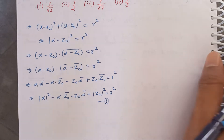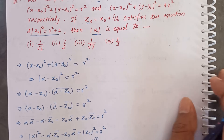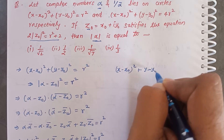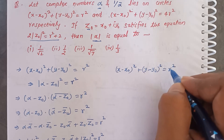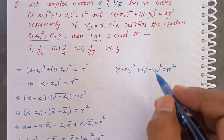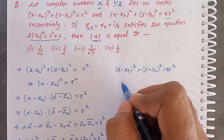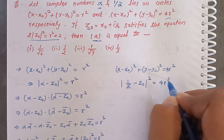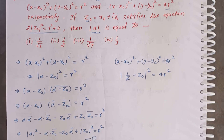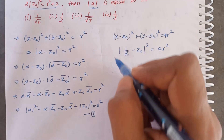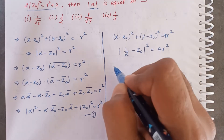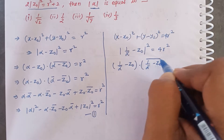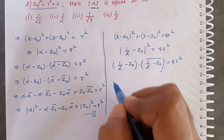Now for the second condition: 1/ᾱ belongs to its circle. The circle equation gives (x − x₀)² + (y − y₀)² = 4r². So |1/ᾱ − z₀|² = 4r². We expand this similarly: (1/ᾱ − z₀) times its conjugate equals 4r². This can be written as (1/ᾱ − z₀)(1/α − z̄₀) = 4r².